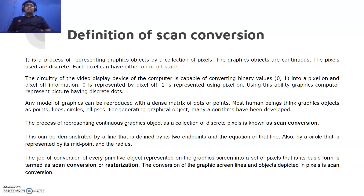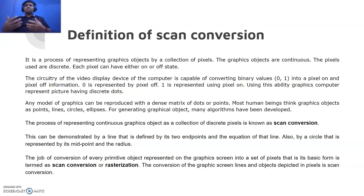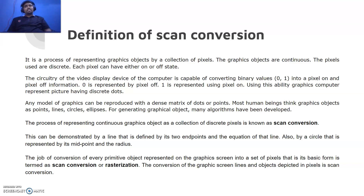Most human beings think of graphic objects as points, lines, circles, or polygons. Any model of graphics can be reproduced onto the screen with a dense matrix of dots or points, which can be represented using points, lines, ellipses, and polygons. The process of representing continuous graphic objects as a collection of discrete points or pixels is known as scan conversion.